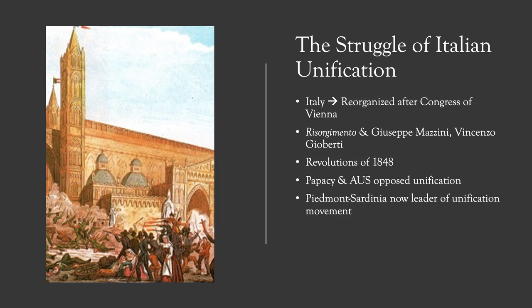Because Piedmont-Sardinia had already existed as an independent kingdom, it was able to retain its liberal constitution. After the revolutions of 1848, it was very clear that the Papacy and also Austria opposed unification in Italy. They also opposed any modern trends like republicanism or liberalism, especially because the Pope had been driven from Rome during the revolutions of 1848. The Papacy continued to have a lot of political influence and control not only in Rome but also across central Italy, and Austria continued to have a lot of control in northern Italy, especially in the regions of Lombardy and Venezia.